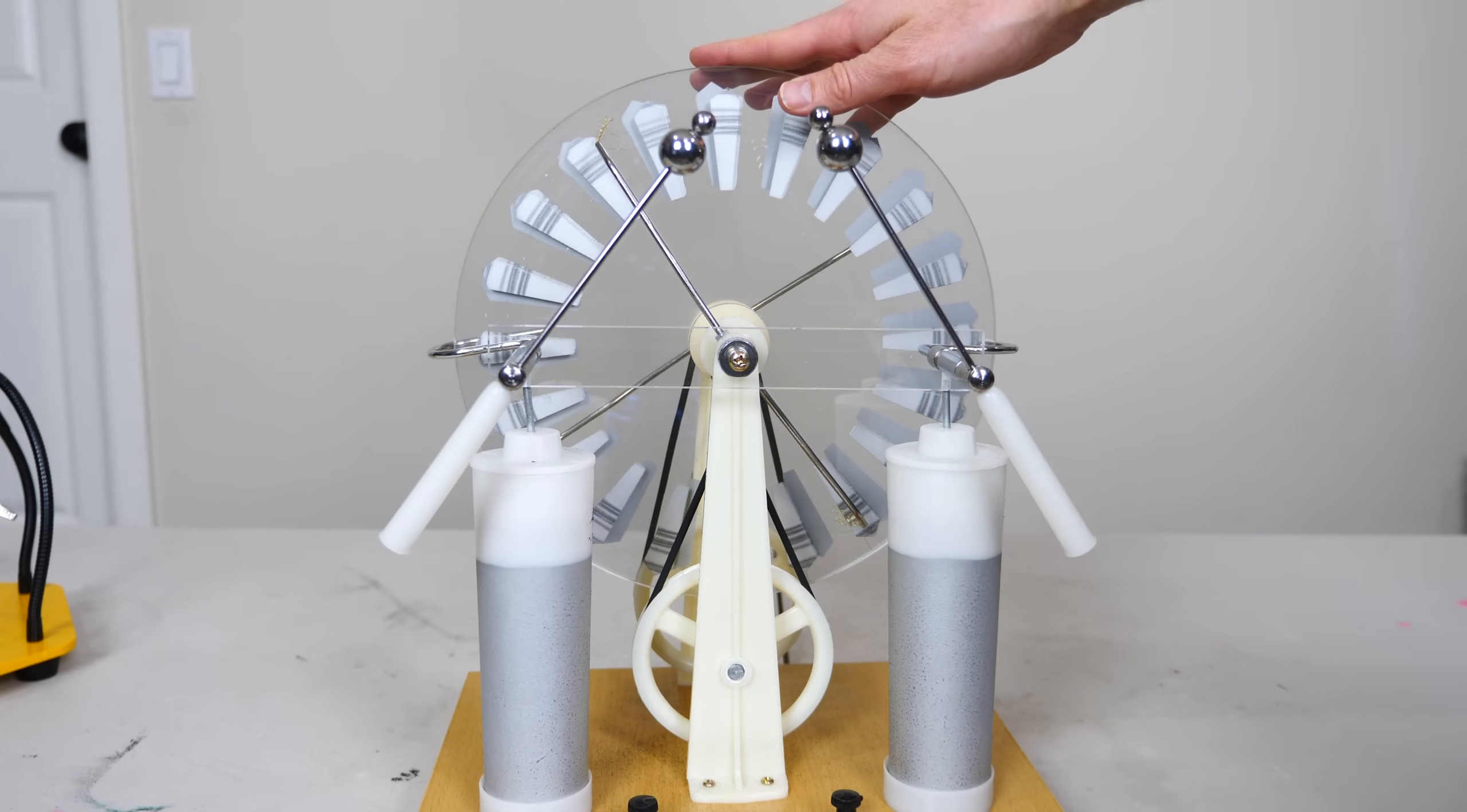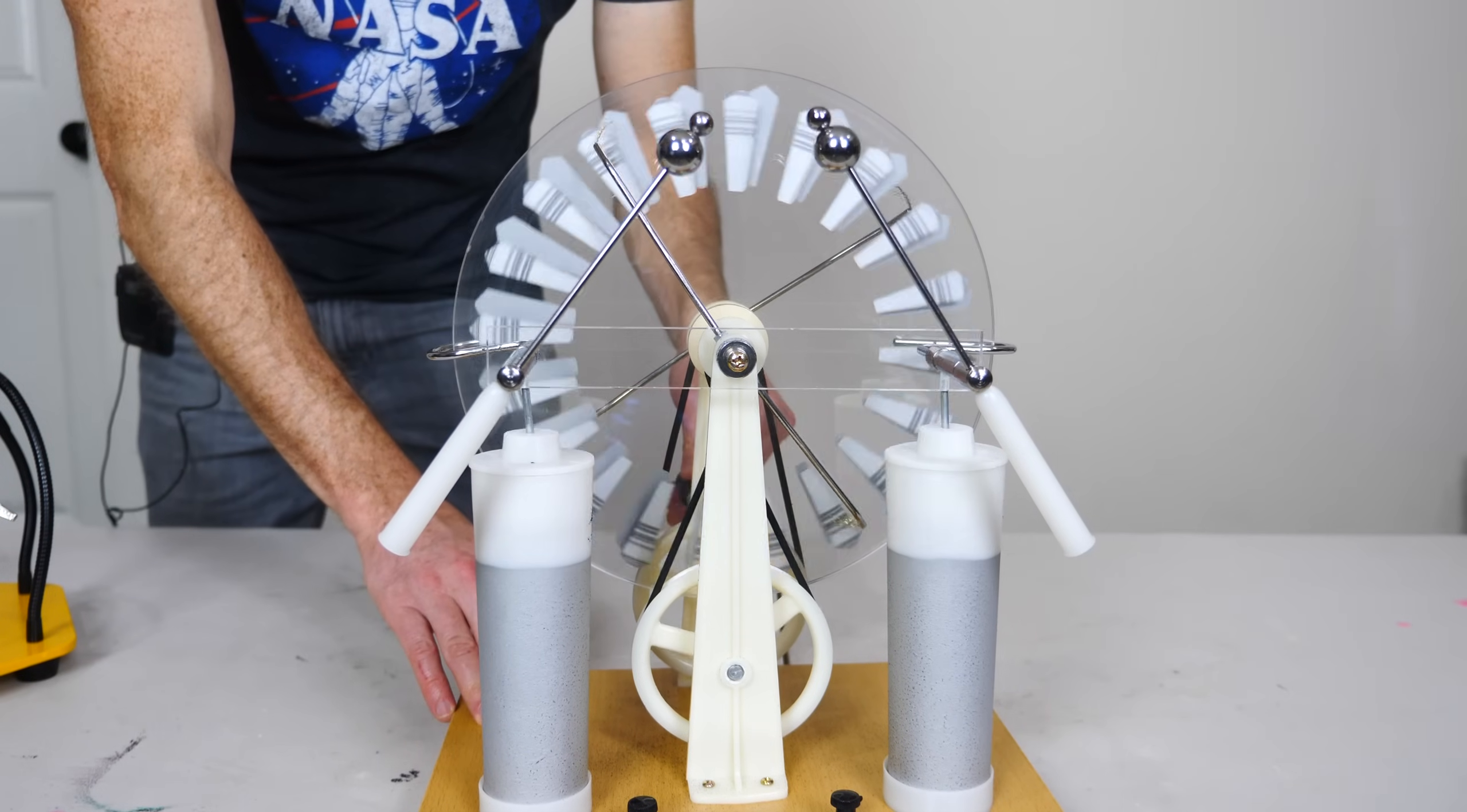Now this is called a Wimshurst machine and it can generate extremely high voltages. All you have to do is crank the handle at the back.